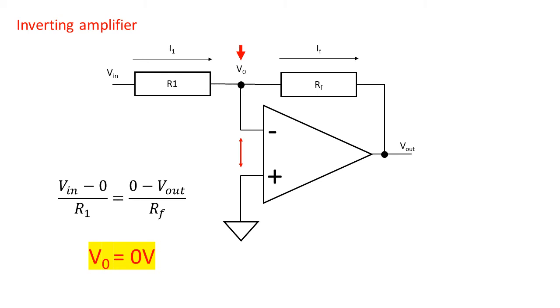This simplifies the equation to VIN over R1 equals negative Vout over RF.